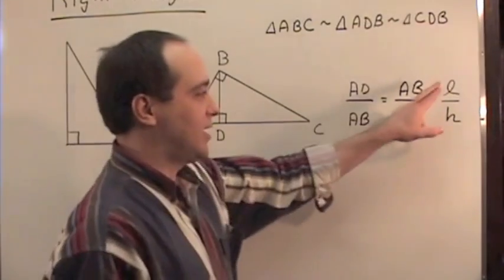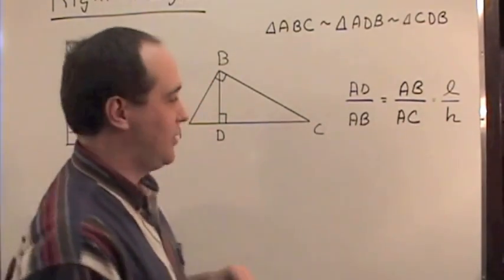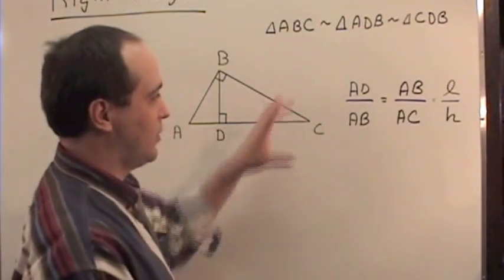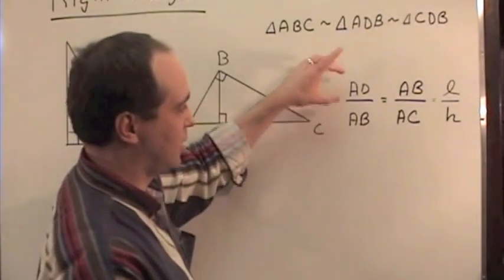And notice, I've got it over here, this is the leg over the hypotenuse. This is really what this is, a relationship of the small triangle to the large triangle.